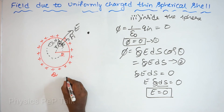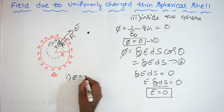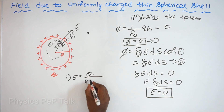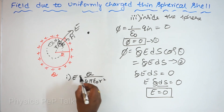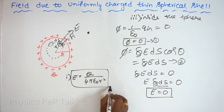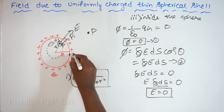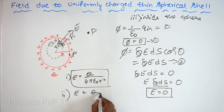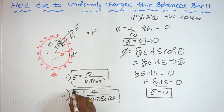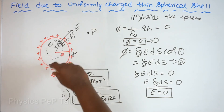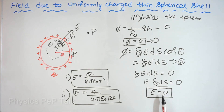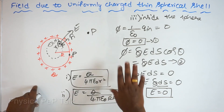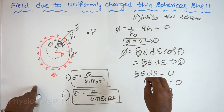To summarize: Case 1, when point P is outside the sphere, E = Q / (4 pi epsilon naught r squared). Case 2, when point P is on the surface of the sphere, E = Q / (4 pi epsilon naught R squared). Case 3, when point P is inside the sphere, the electric field is 0. With this, we have successfully completed Chapter 1: Electric Charges and Fields.